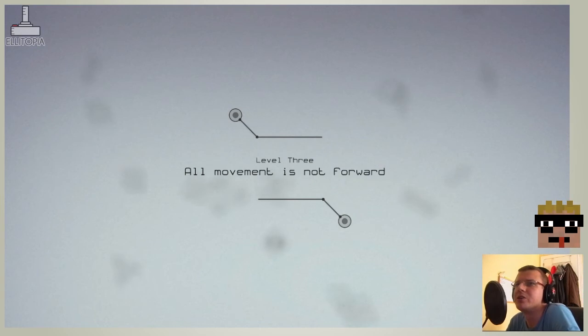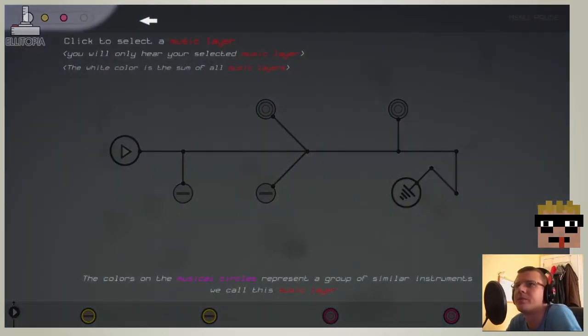Level 3. All movement is not forward. Click to select a music layer. You will only hear your selected music layer. The white colour is the sum of all music layers. Okay, the colours on the music circles represent a group of similar instruments. We call this music layer. Okay.